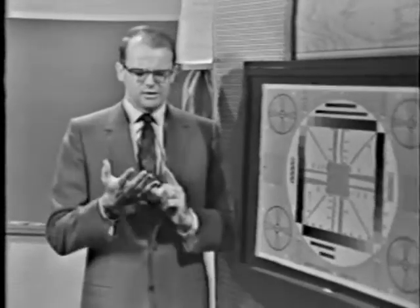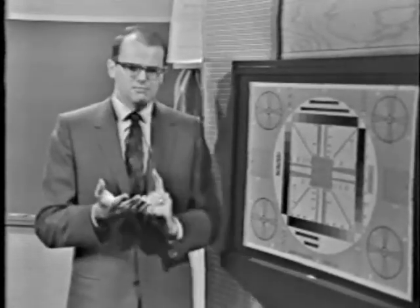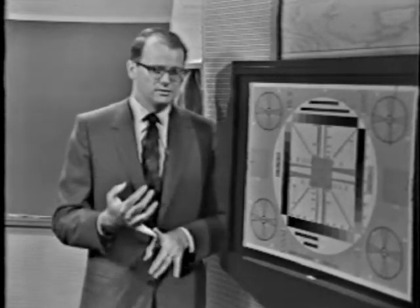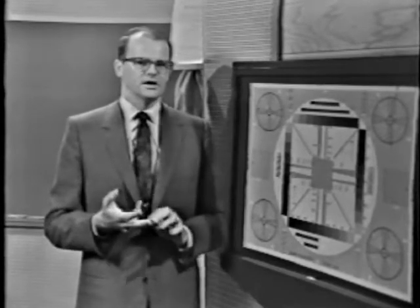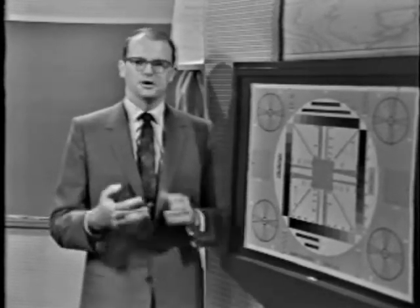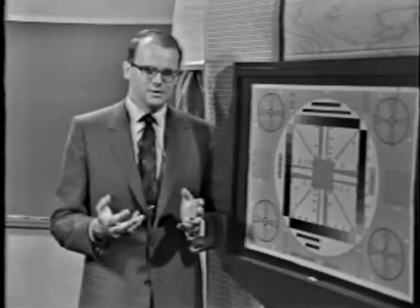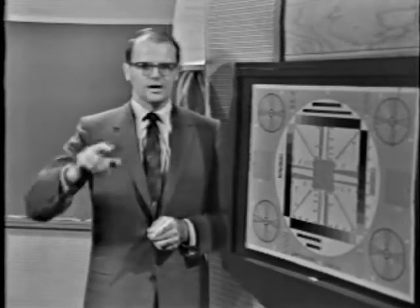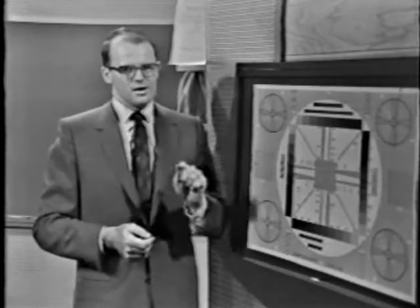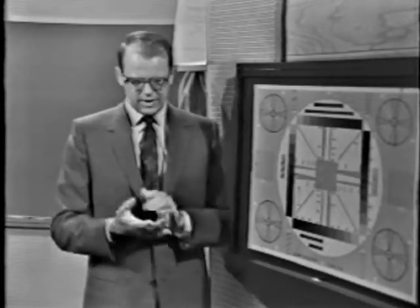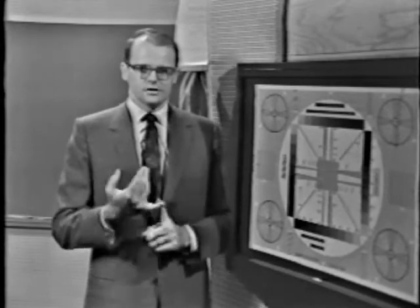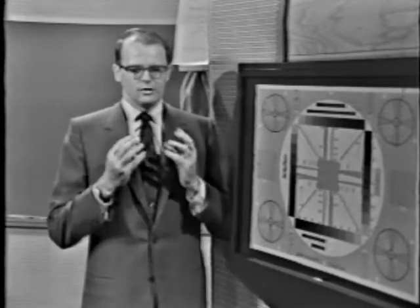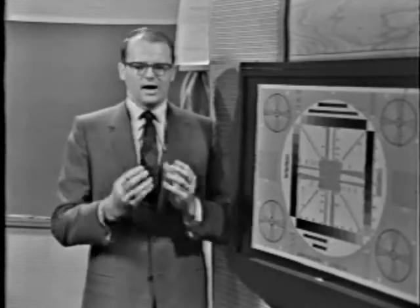Roughly speaking, the variance is the reciprocal of the information. There are some very precise mathematical definitions for information; one rather loose definition is to just say it's the reciprocal of the variance. We all know how variance is defined: give me a distribution of observations f(y), and I can get the variance by collecting the second moment of the observations corrected for the mean.